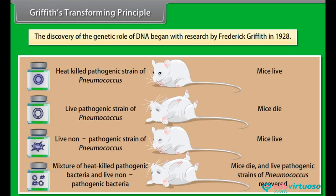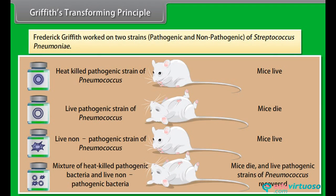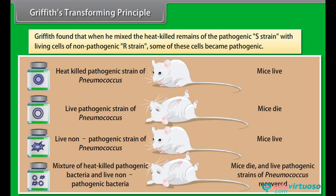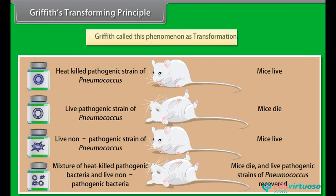Griffith's transforming principle. The discovery of the genetic role of DNA began with research by Frederick Griffith in 1928. Griffith worked on two strains — pathogenic and non-pathogenic — of Streptococcus pneumoniae. He found that when he mixed heat-killed remains of the pathogenic S strain with living cells of the non-pathogenic R strain, some of these cells became pathogenic. Griffith called this phenomenon transformation.